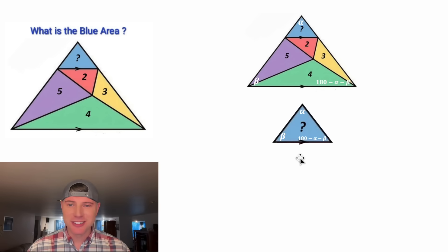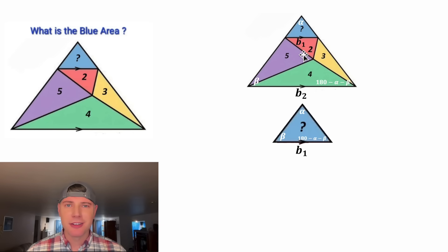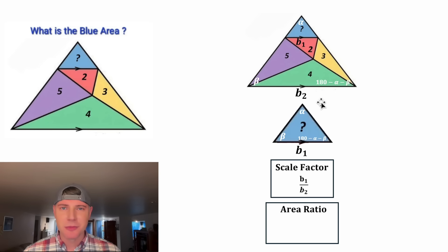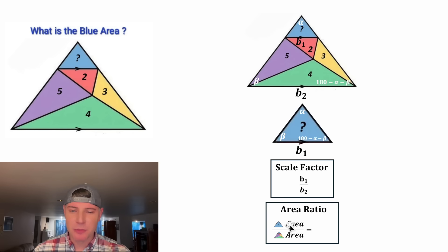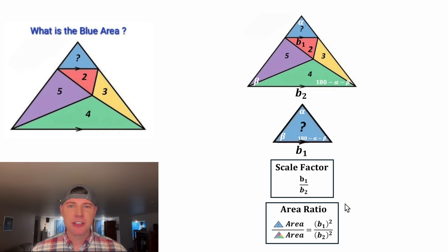There are a lot of things we can do with similar triangles. Let's label the base of our blue triangle B sub 1 and the base of our larger triangle B sub 2. Now we can express the scale factor of these and also the area ratio. The scale factor of the smaller triangle over the larger triangle will be B sub 1 over B sub 2. And we can also do the area ratio — the area of the smaller triangle over the area of the larger triangle equals the scale factor squared, so it'd be B sub 1 squared over B sub 2 squared. That's true for any similar figures: the areas will always be in the same ratio as the square of the scale factor. So now we've got to figure out a value for B sub 1 over B sub 2.